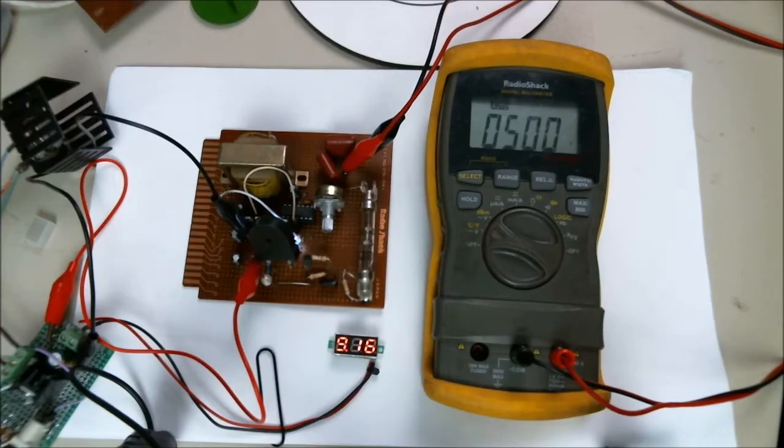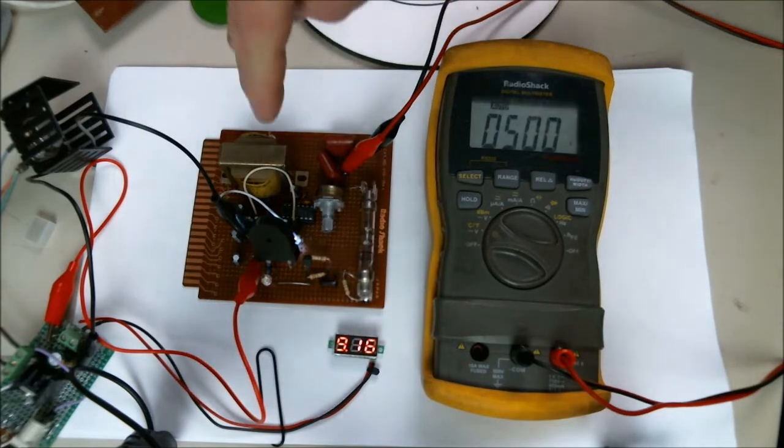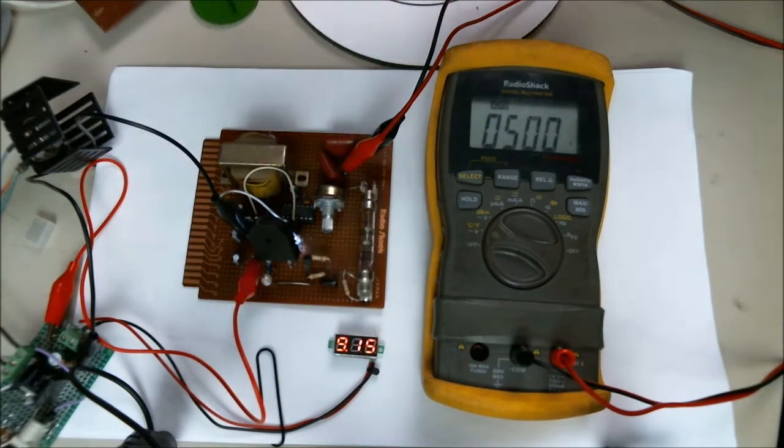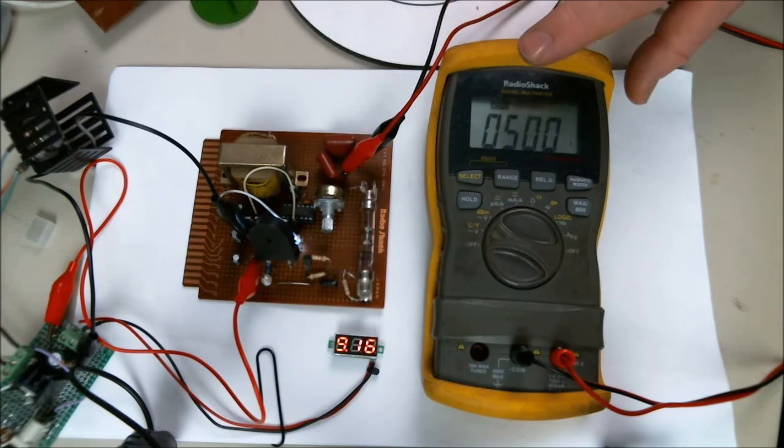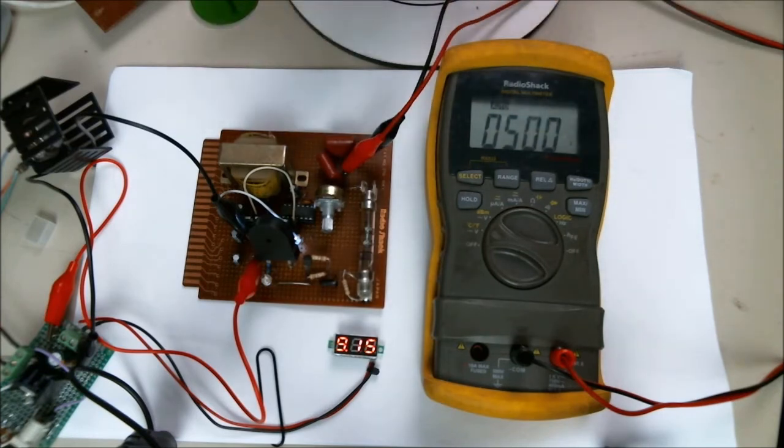All right, here is my Geiger counter board again. I am not concerned at all with the Geiger counter circuit as such. Here is my high voltage supply that's generated through this transformer. Output is about 170, 180 volts.